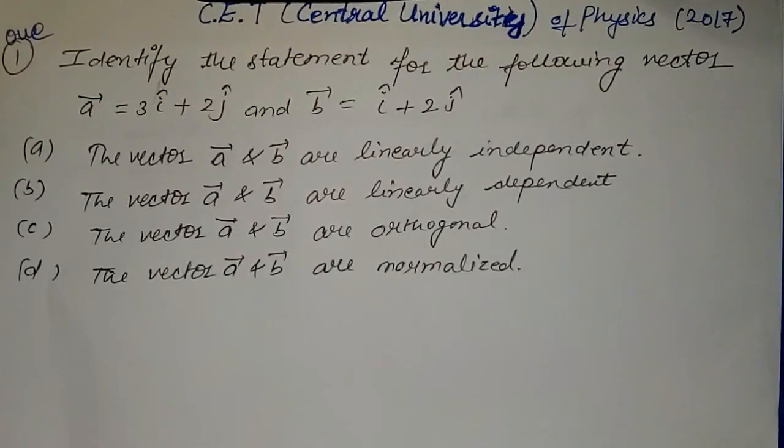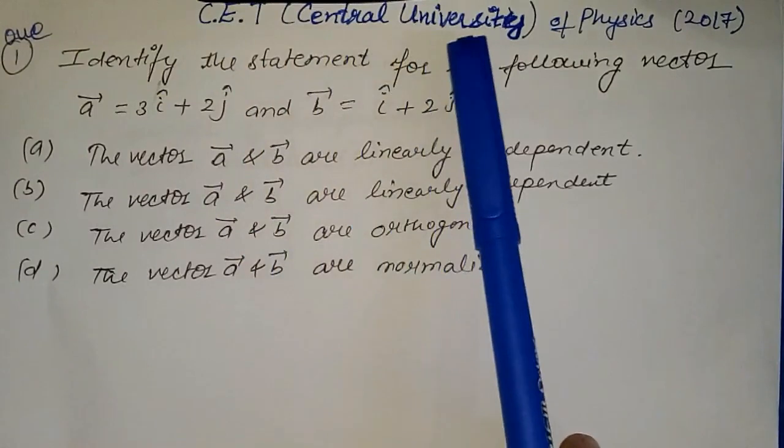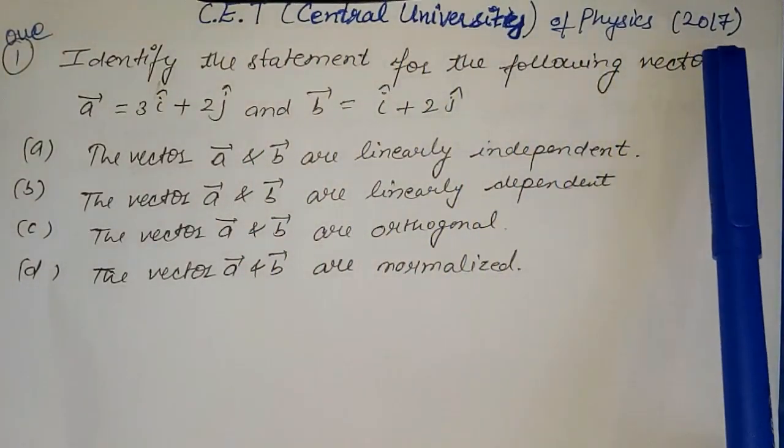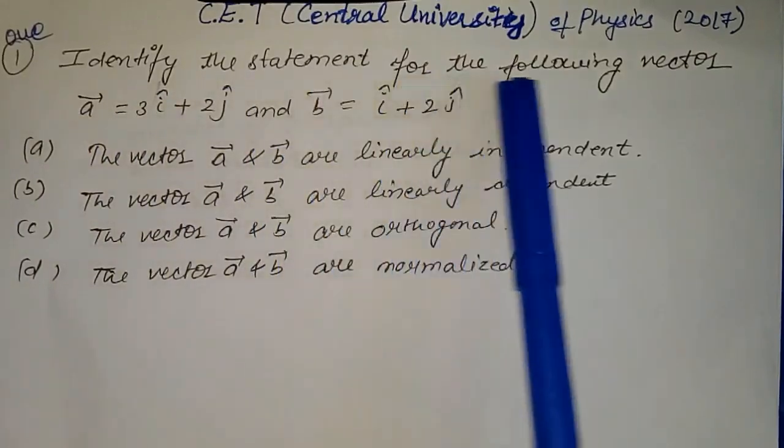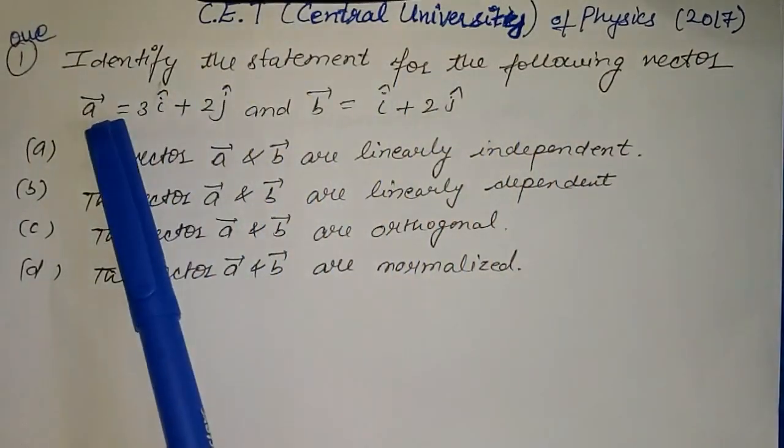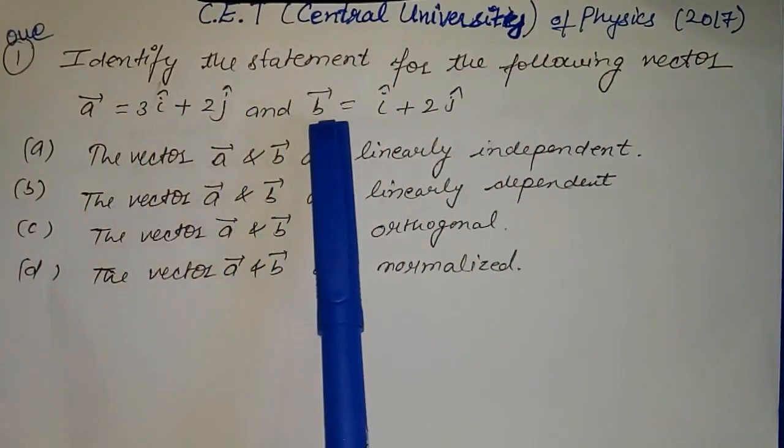Hello friends, today we will discuss problems from the Common Entrance Test of Central University of Physics 2017. The first question is to identify the statement for the following vectors: a vector equals 3i cap plus 2j cap, and v vector equals i cap plus 2j cap.